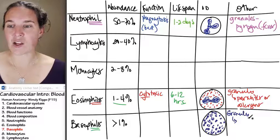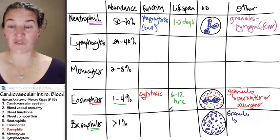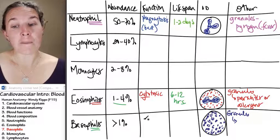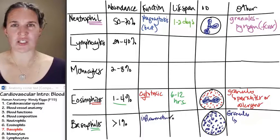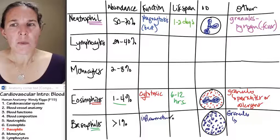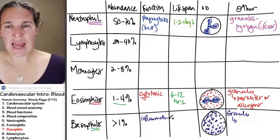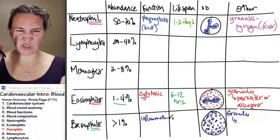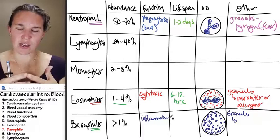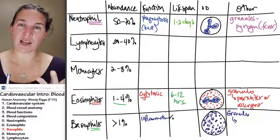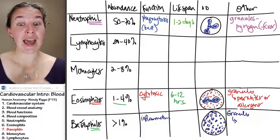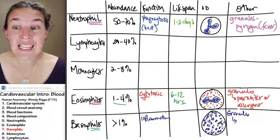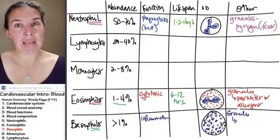And I'm going to tell you what those granules are because it's related to their function. They are basically inflammation makers. They make inflammation happen. And inflammation is when you get an infection and you get red, hot, swollen, and painful. That's inflammation. These guys are filled with crazy granules that make that happen.